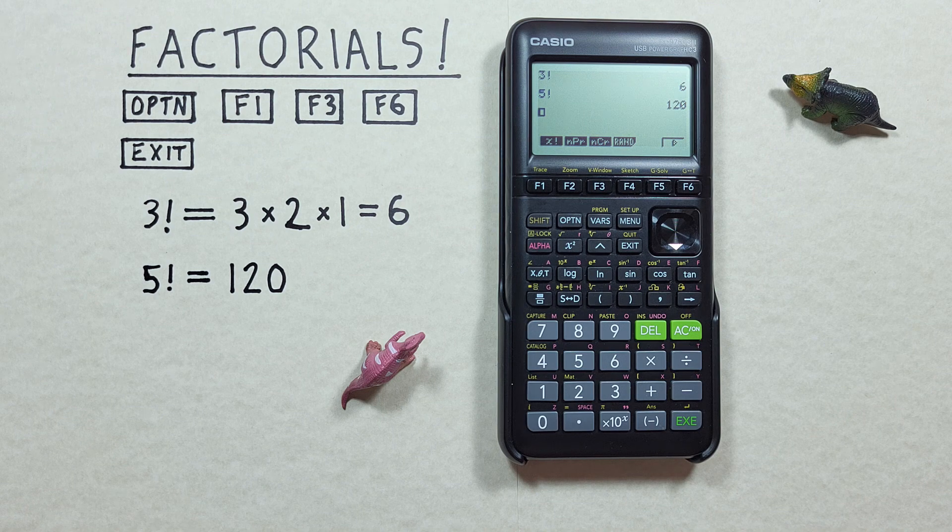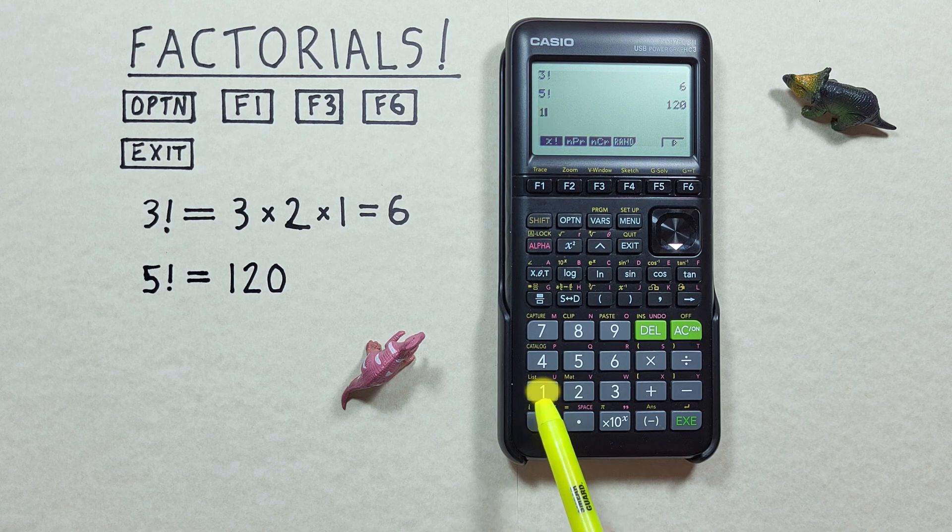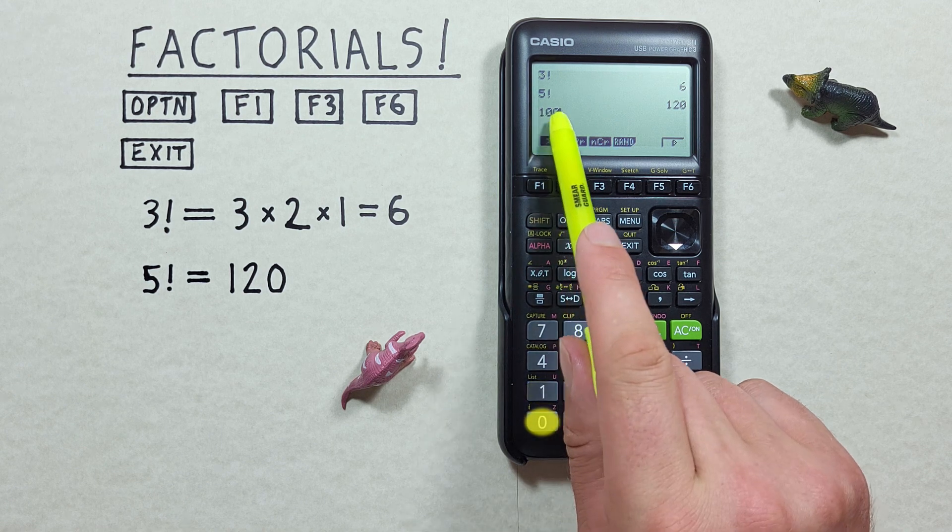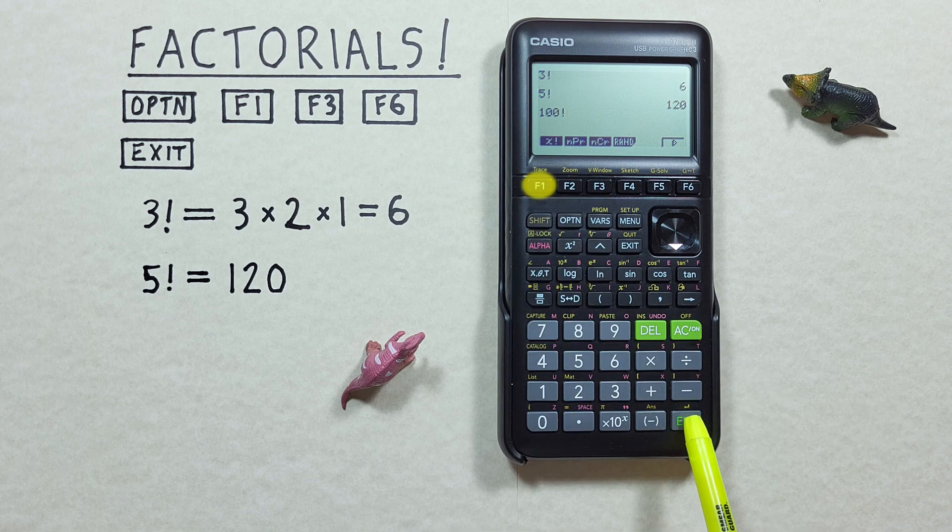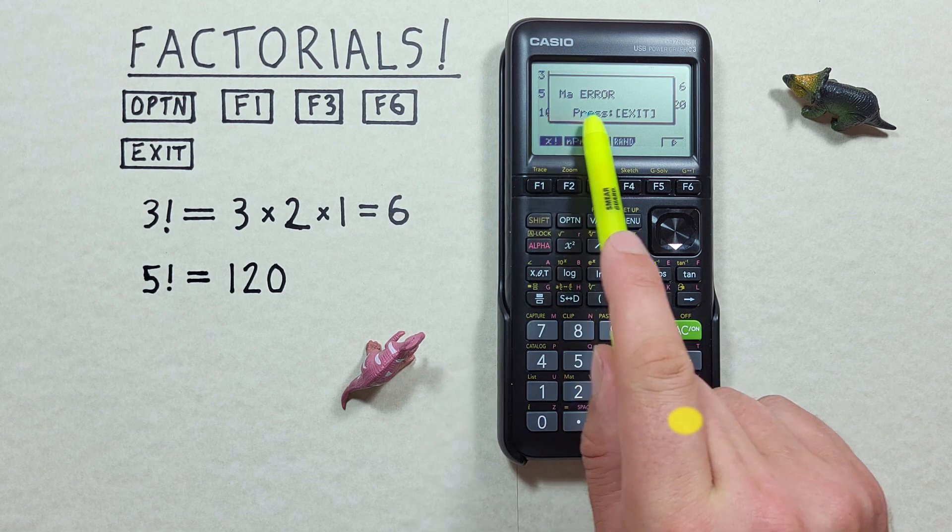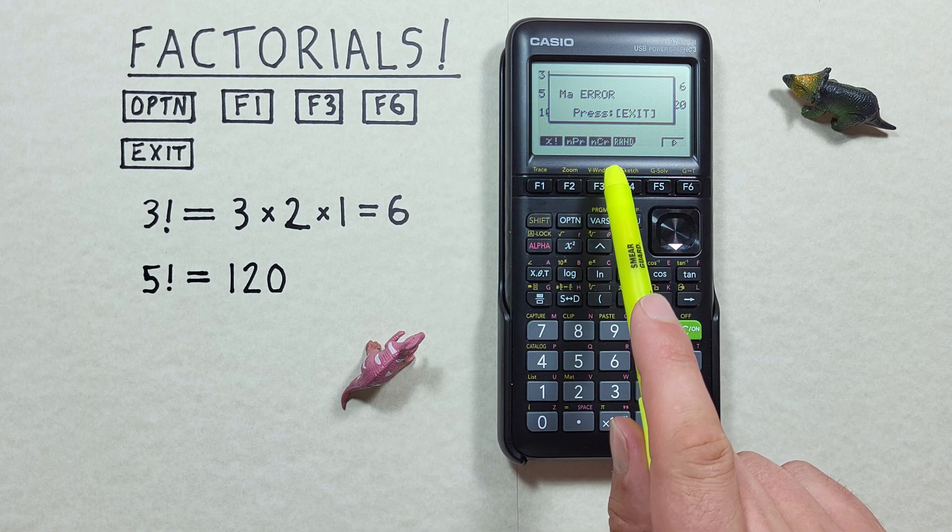But what happens if we try to do a very large factorial like 100 factorial? We enter that on our screen and then press the factorial and the EXE we'll get this error screen. That's because the resulting number is just too large for this calculator to display.